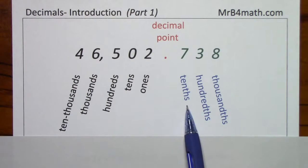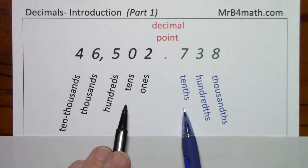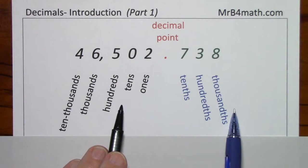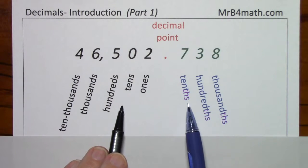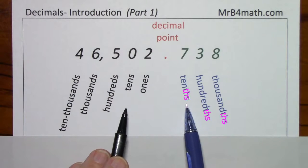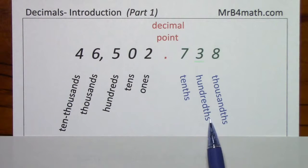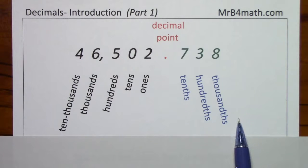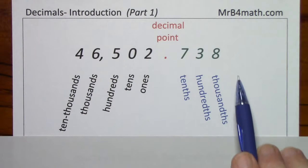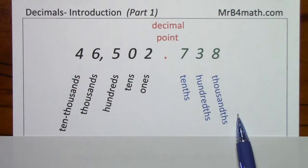Place value for decimals is very similar to place value for whole numbers, except that it goes in the opposite direction and has a slightly different ending. For decimals, we start with tenths, then hundredths, then thousandths. The next place, if there was a digit, would be the ten thousandths place.